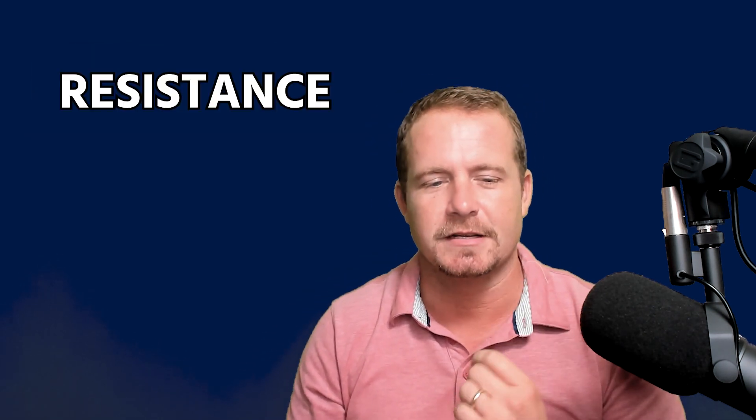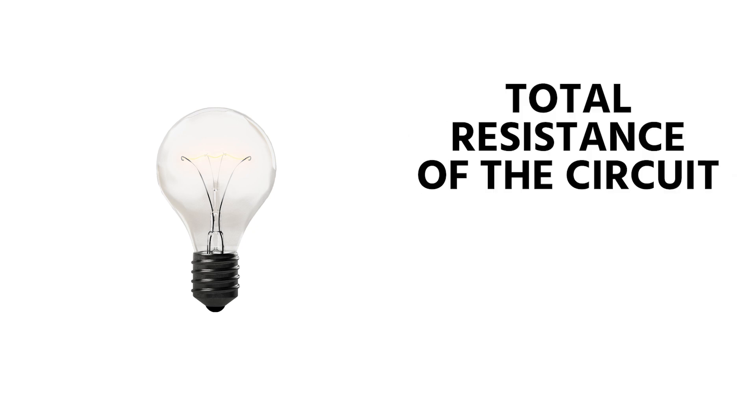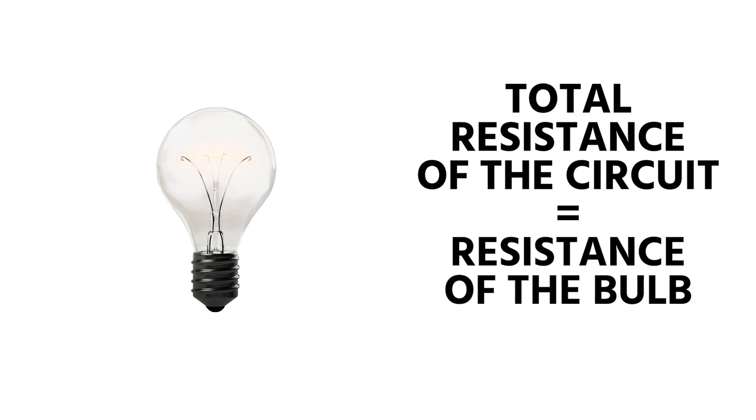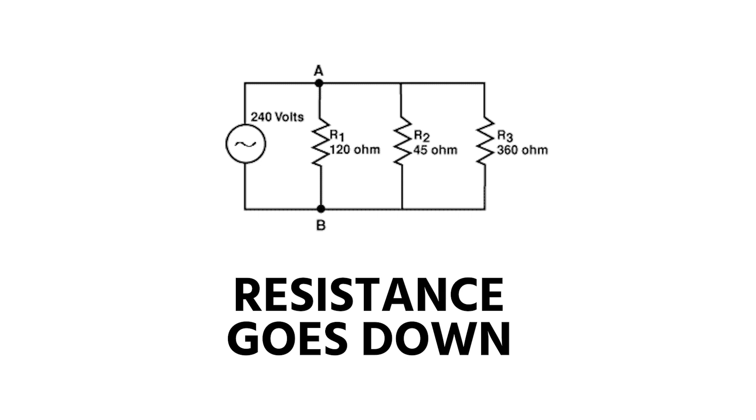But the resistance is a bit more tricky. The total circuit resistance of parallel loads goes down the more loads you add. For example, if you have one light bulb connected to a power source, the total resistance is just the resistance of the bulb. If you add another bulb in parallel, the resistance of the circuit actually goes down. So here's how you calculate the resistance of a parallel circuit.